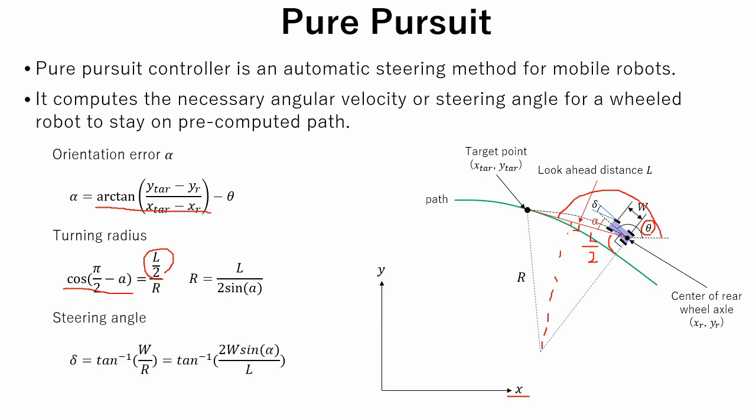For simplicity we assume that steering angle is tangent of wheel base and turning radius. This assumption is not strictly correct but it is enough for our use case.